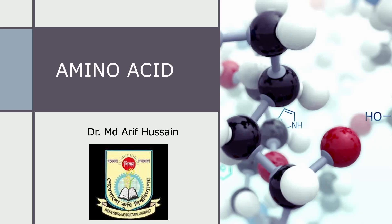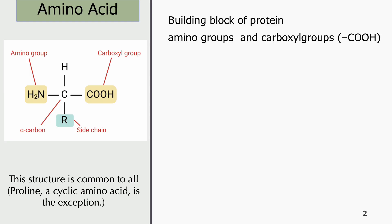Today I will discuss amino acids and give an idea about different types. This is the common structure of an amino acid. It's called an amino acid because it contains an amino group, which is slightly basic, and also a carboxyl group. It must contain an alpha carbon, which is why we call it an alpha amino acid, and there must be one side chain.